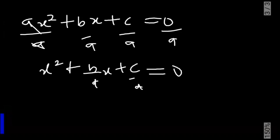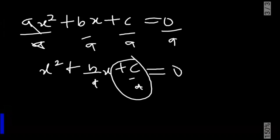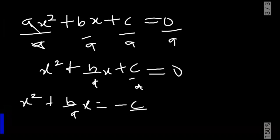The next thing we are going to do is to move the c over a term to the right hand side. It becomes negative, so we have x squared plus b over a times x equal to minus c over a.